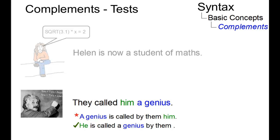Thus, a genius cannot become the subject, whereas the object him can surface as the subject in a corresponding passive. By the way, if you replace a genius by a cab, it works because a cab is not an object complement, but a second object.